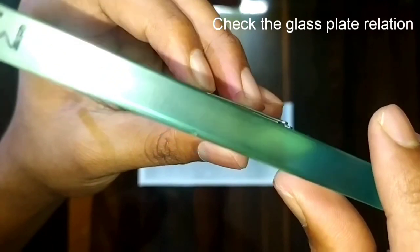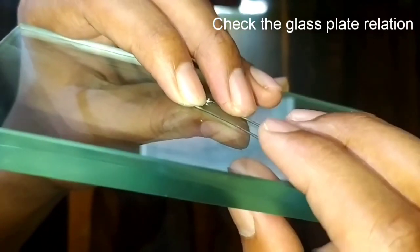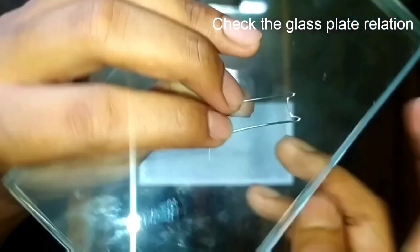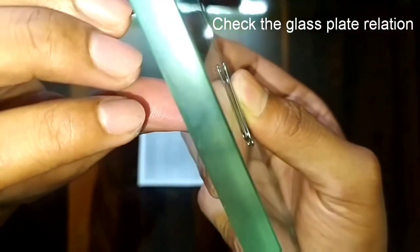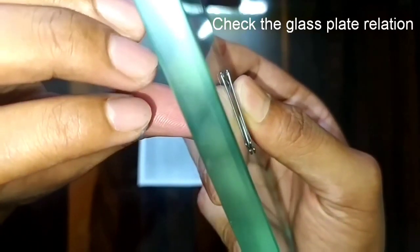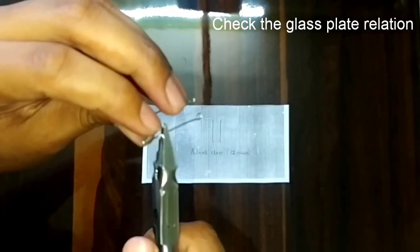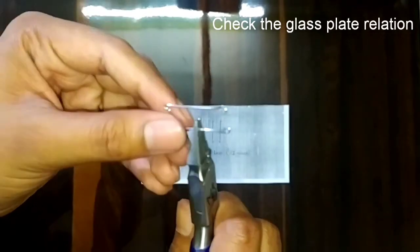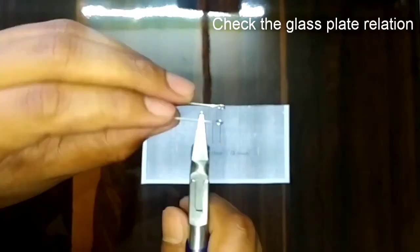Using the plier, we will make it straight. Here we can see that the Adams clasp is ready, that is its outline form.